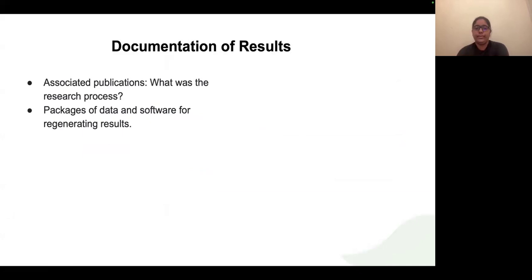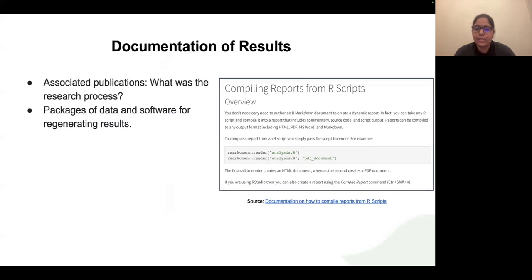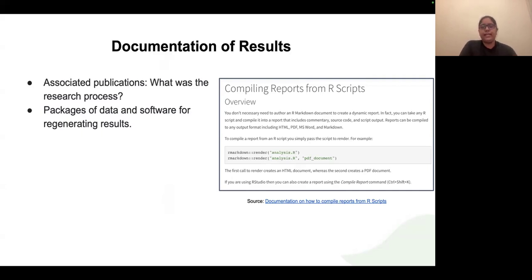How do you document results of the research study? It's good practice to document results, and writing research papers is one way. It's also possible to write a paper about the software itself. Information that can be included covers how the work or result can be replicated, what packages are being used, and what the research process was. For example, in R, you can compile reports from R scripts using R Markdown — a popular R package — which lets you include information about the process along with R code and its results.